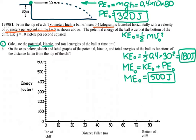The total mechanical energy to start with is 500 joules. Since only conservative forces act on the system, the mechanical energy does not change — it stays at 500 joules throughout the motion.